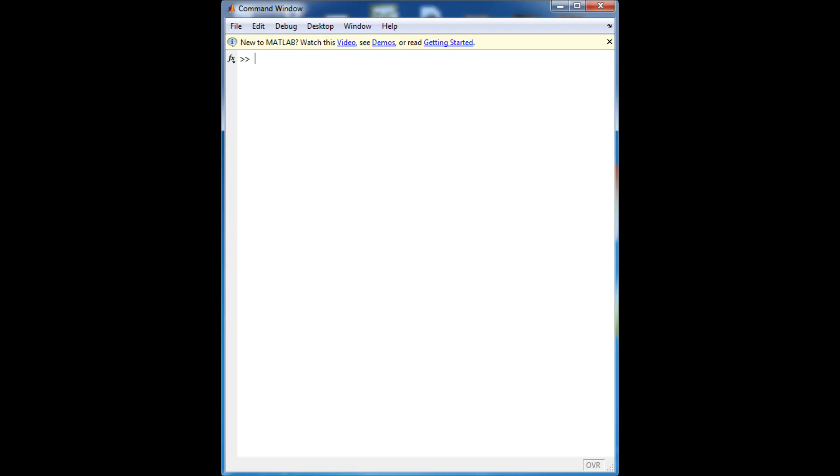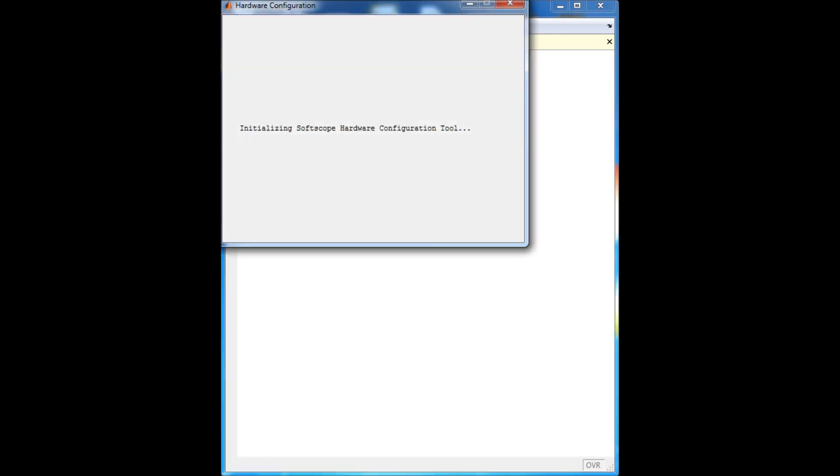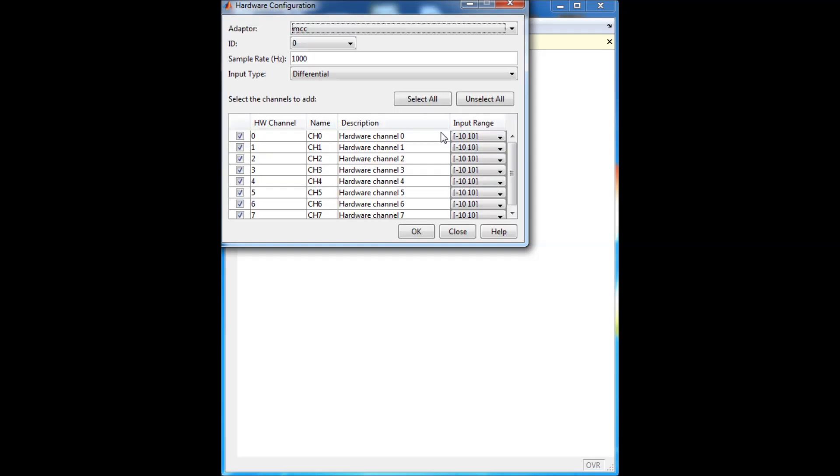MATLAB has a function built into it to help you use this data acquisition system like an oscilloscope. All you have to type in is soft scope in your MATLAB window and it'll take a second for the hardware configuration window here to come up. You want to make sure this top part adapter says MCC ID is set to 0 and the sampling rate we'll talk more about later but that's fine for now. I always unselect all the channels and then just pick the one I want and click OK.